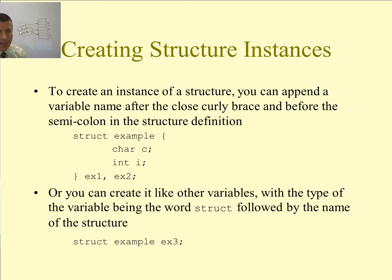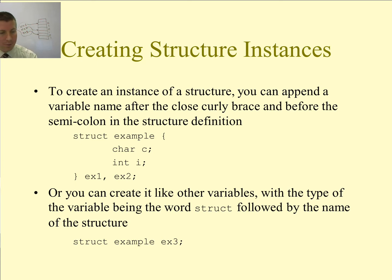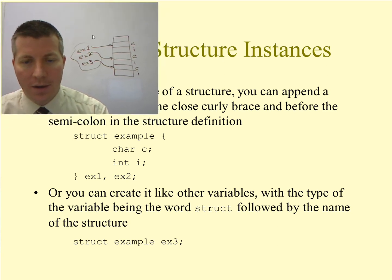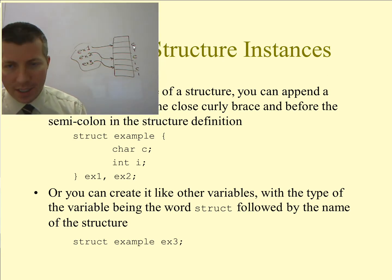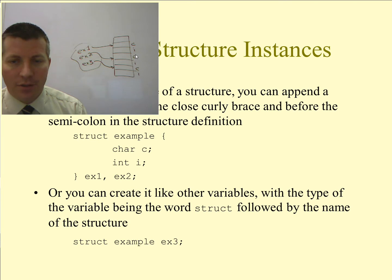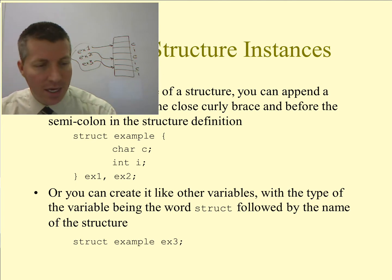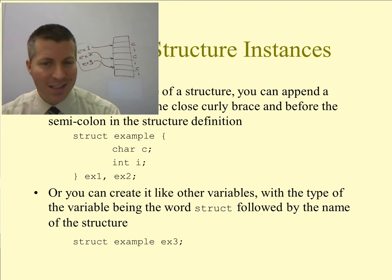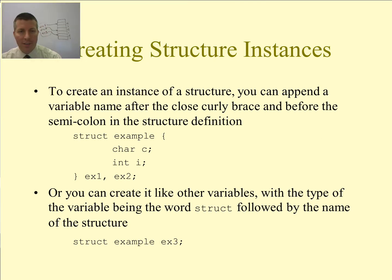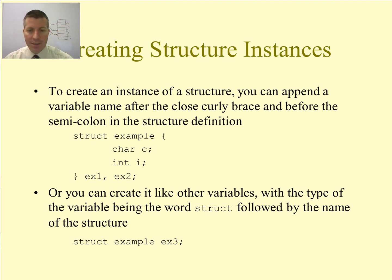What would happen is I would get ex3 pointing at some location, which is where ex3.c would be, and then ex3.i would be right after it. So we have ex1 with its own c and i, ex2 with its own c and i, and ex3 with its own c and i. The only way they're related to each other is that the type of the variable is the same — it's like creating two integer variables. They just have the same type, and that's the only relationship between ex1, ex2, and ex3.